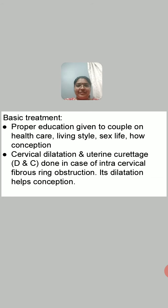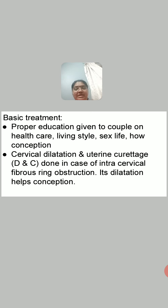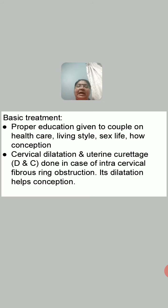In the first basic treatment, proper education is given to the couple. Regarding female infertility, education should be given to the female on health care. If the woman is too obese and her weight is more than 75 kg, then ask her to reduce her weight, because obesity is a very important cause of infertility. You can advise her to restrict carbohydrate and fatty food.